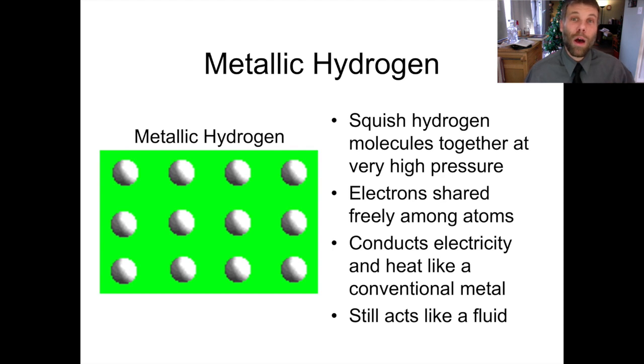When you do this, those shared electrons, they can now start to flow around. And they can move in between all of these hydrogen nuclei more or less freely. And this is how terrestrial metals, substances like copper or iron, will conduct heat and electricity. And that's why we call them metals, because they have this structure. So when you take hydrogen and you smoosh it down, it starts to act like a metal. It conducts heat and electricity, but it's still kind of fluid. So it can still flow around a little bit.